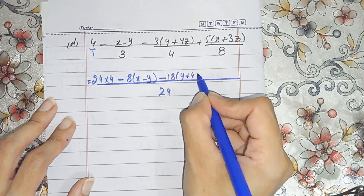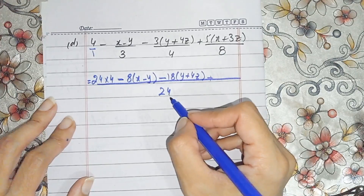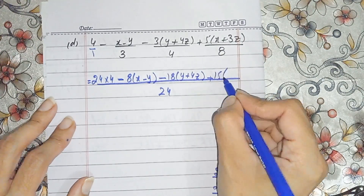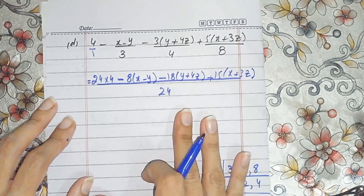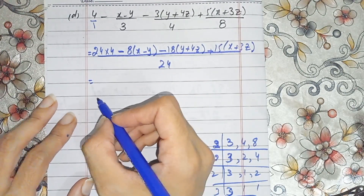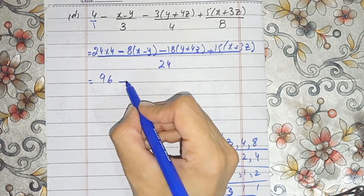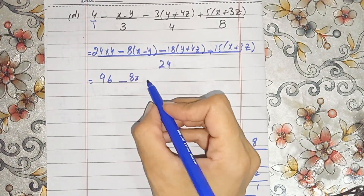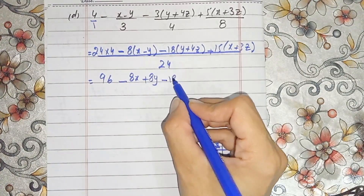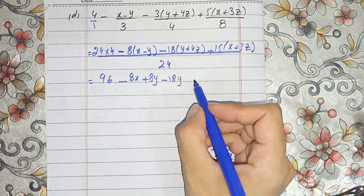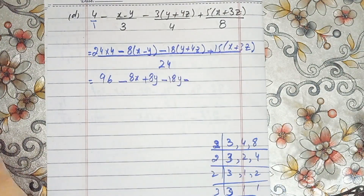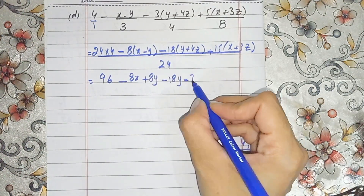Multiplying: 8 times 24 gives the first term, 6 times 24 for the second, and 3 times for the third (X plus 3). Expanding: 24 divided by 4 gives 6, carrying through: 6 gives minus 8X, minus minus is positive so plus 8Y, minus 18Y, plus 4 times 72Z, plus 15X and 45, all over 24.